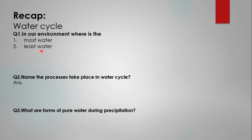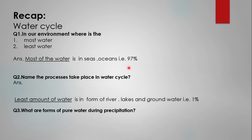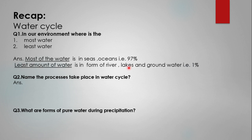Recheck your answers now. Most of the water in our environment is present in seas and oceans — how much? It is 97%. And the least amount of water is present in the form of rivers, lakes, and groundwater — and how much? It is only 1%.